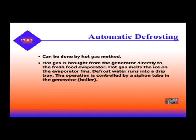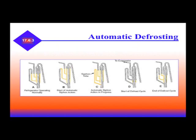Automatic defrosting in absorption systems can be done by the hot gas method. Hot gas is brought from the generator directly to the fresh food evaporator. Hot gas melts the ice on the evaporator fins, and defrost water runs into a drip tray. The operation is controlled by a siphon tube in the generator. In sequence: A — refrigeration operating normally; B — start of automatic siphon action; C — siphon action in process; D — start of the defrost cycle; E — end of the defrost cycle.